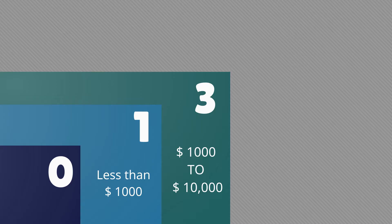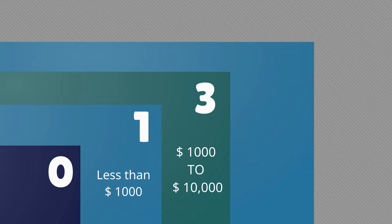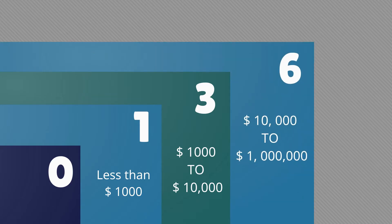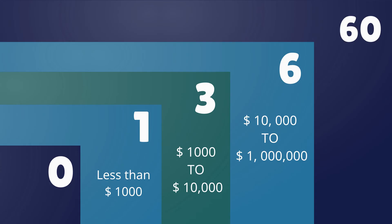Six confirmations are enough for large payments between $10,000 and $1,000,000, and six is the standard for most transactions to be considered secure. Sixty confirmations are suggested for large payments greater than $1,000,000 — less may be fine, but sixty is to be safe.